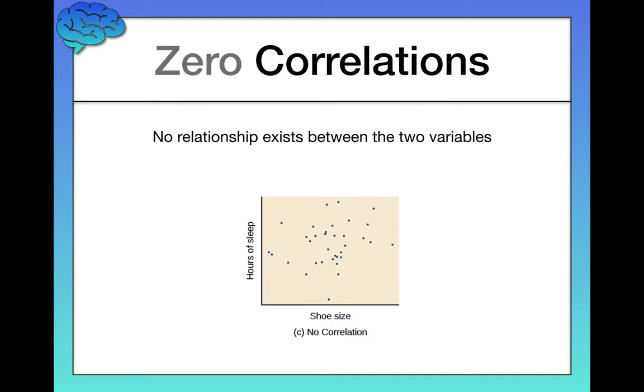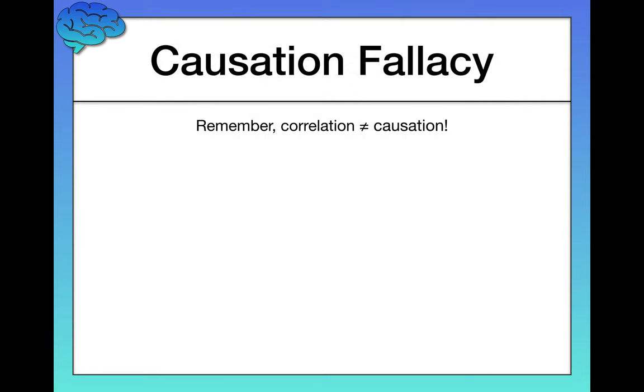Now, correlational studies are awesome, and they're really useful. They tell you whether there are relationships between variables in the world, great information to have. But remember, as we talked about in a previous video, when we learned about the six principles of scientific thinking, correlation does not imply causation.